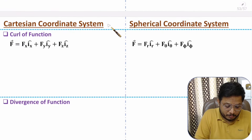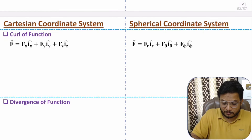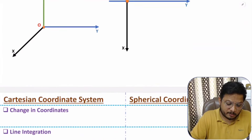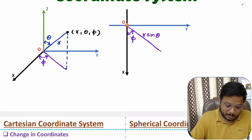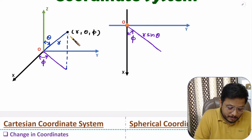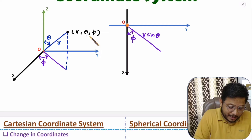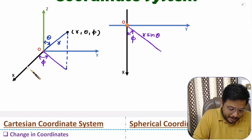I'll explain these with respect to the Cartesian coordinate system. First of all, you need to understand the basics of the spherical coordinate system. In spherical coordinates, we have coordinates r, theta, and phi. r is the radius of the point with respect to the origin. Theta is the angle of this line with respect to the z-axis, and phi is the angle of this line on the x-y plane with respect to the x-axis.